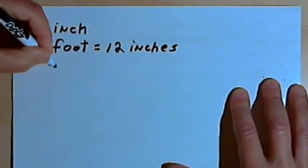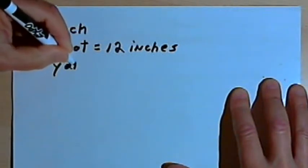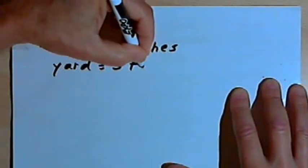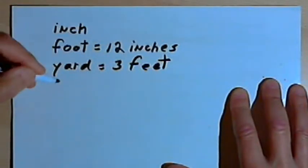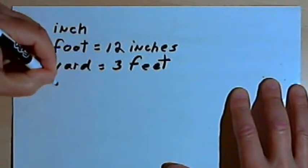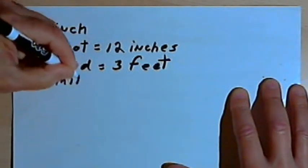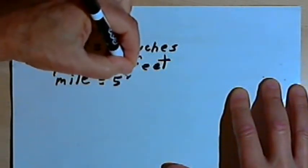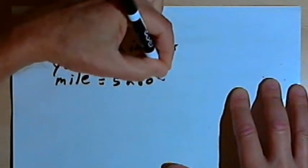If we want something bigger than that we have a yard. A yard is 3 feet. Or we could convert that into inches, that would be 36 inches. And then of course we have the mile. A mile is 5,280 feet.